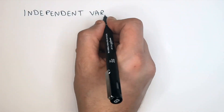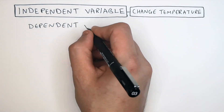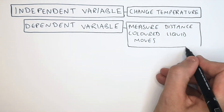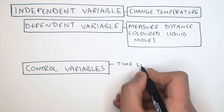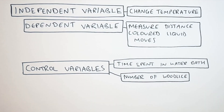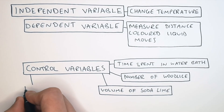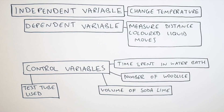In this investigation, the independent variable — what we change — is the temperature. The dependent variable — what we measured — is the distance the coloured liquid moved in the respirometer. To get comparable results, we controlled several variables: the time spent in the water bath, the number of wood lice in each test tube, the volume of soda lime in each test tube, and the test tubes themselves, since different sized test tubes would give different results. You use control variables to increase the reliability of your results and to make your results comparable. Do not write 'fair test' — that is wrong.